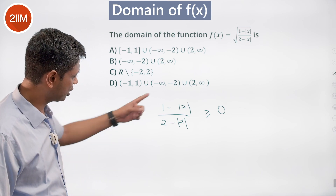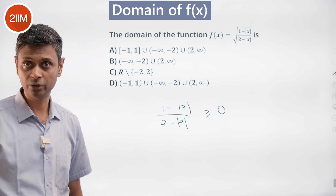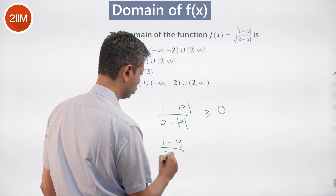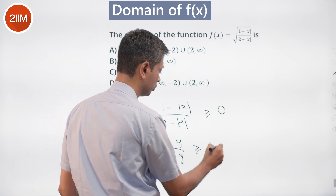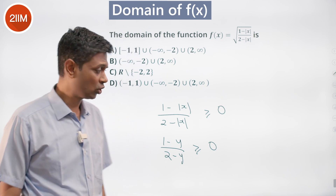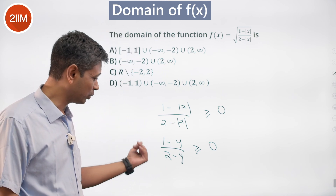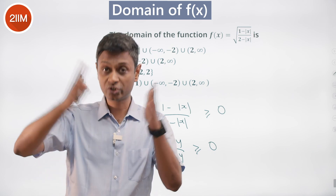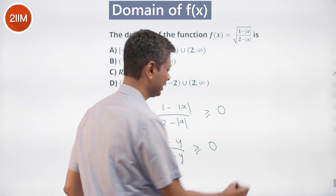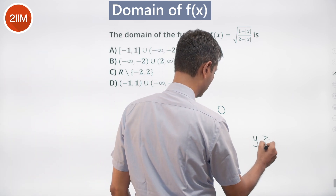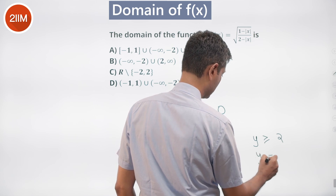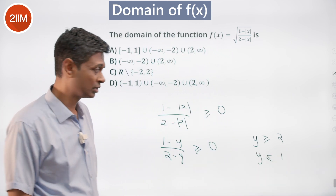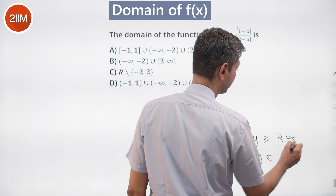So we need (1 - |x|) / (2 - |x|) ≥ 0. We can substitute y = |x|, giving (1 - y) / (2 - y) ≥ 0, or equivalently (y - 1) / (y - 2) ≥ 0. The roots are 1 and 2, so y should lie outside the interval [1, 2] — either y ≥ 2 or y ≤ 1. However, y cannot equal 2 because (2 - |x|) is in the denominator.